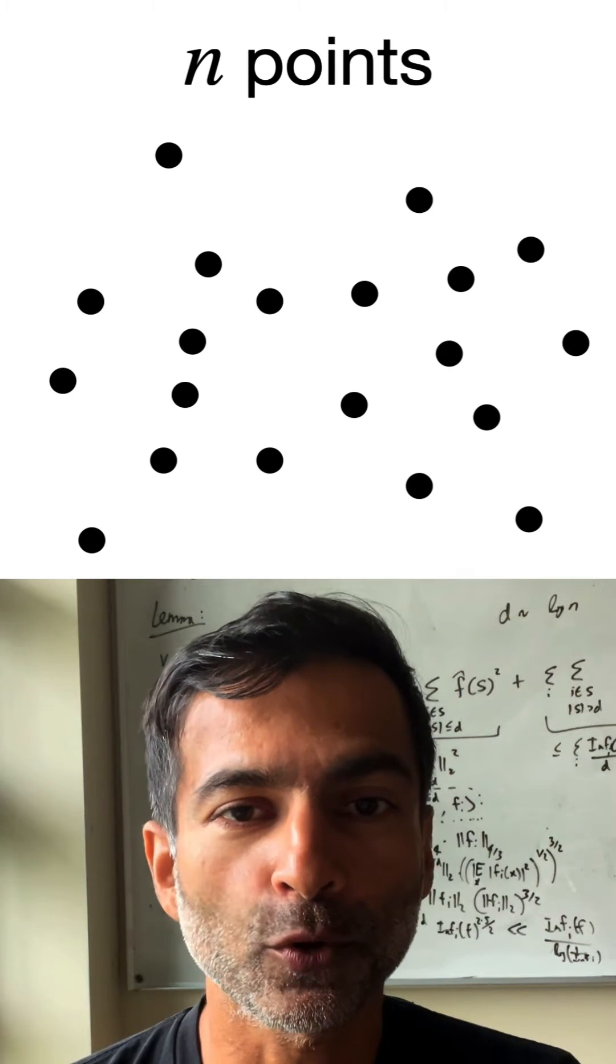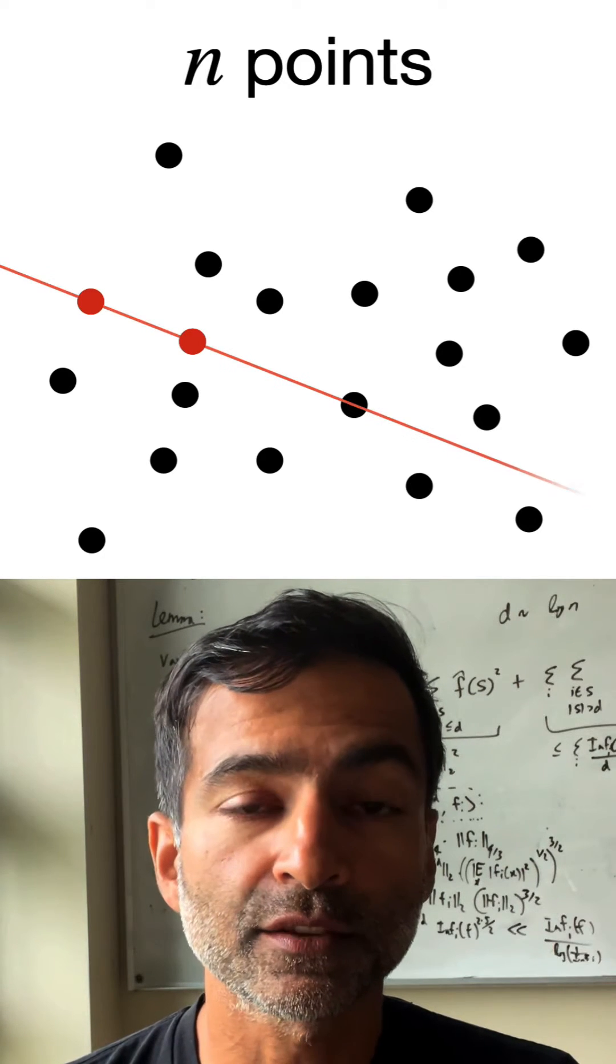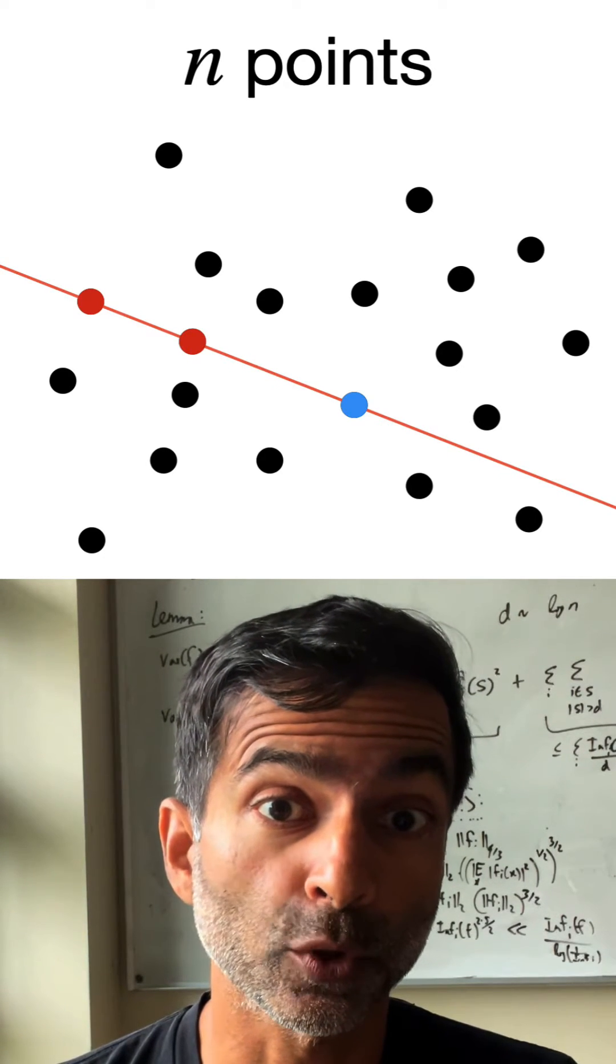Suppose you want to arrange n points in the plane in such a way that whenever you pass a line through two of the points, it always hits a third point.